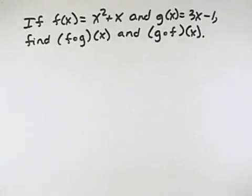If f of x equals x squared plus x and g of x equals 3x minus 1, find f composed with g of x and g composed with f of x.